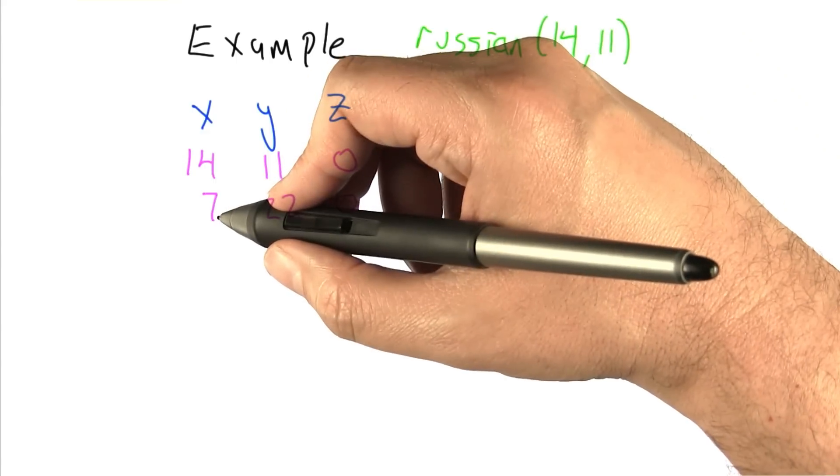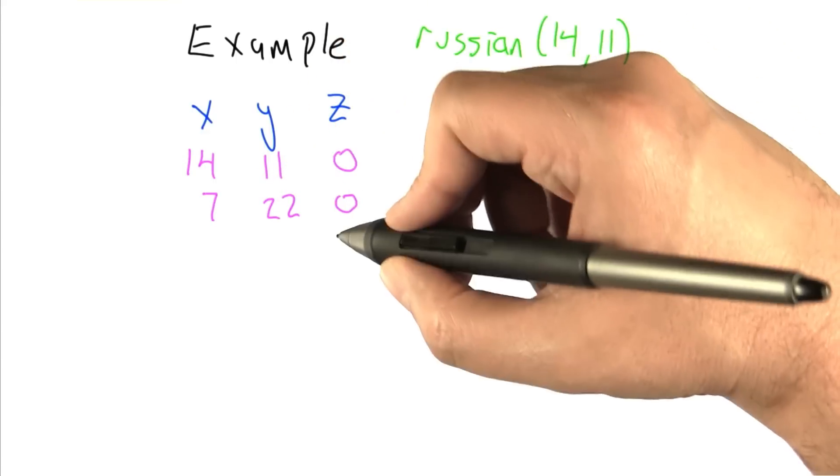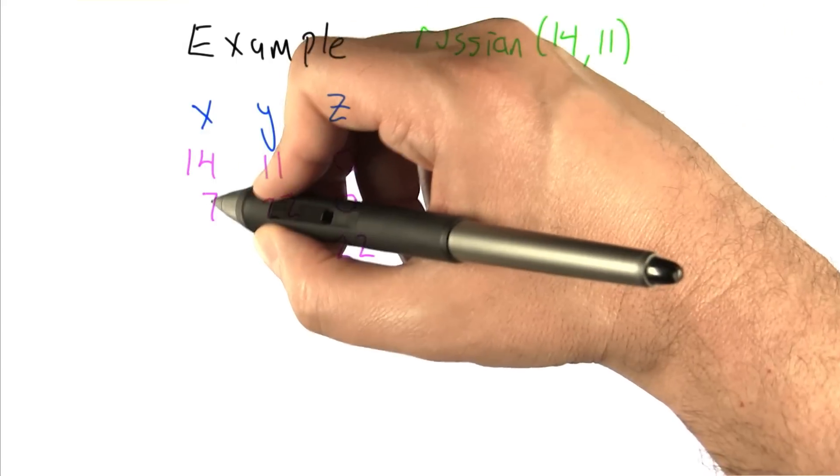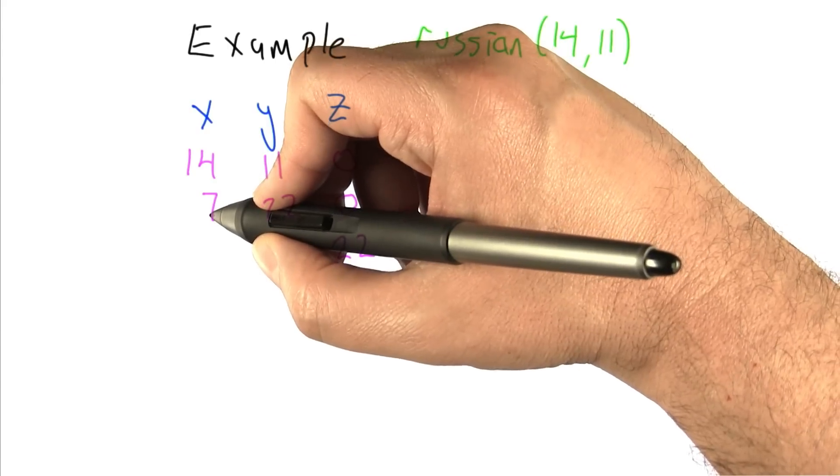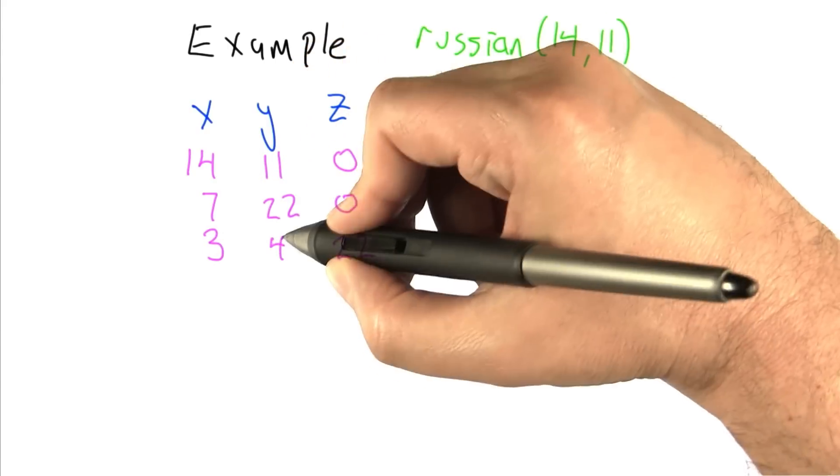Now the next time through, we see that x is odd. So we add y into z. Makes it a 22. We halve x and double y. In this case, halving and rounding down. So that gets us a 3 and a 44.